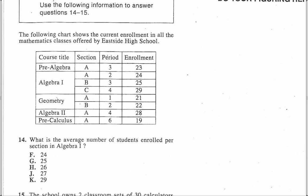This is a pretty standard English to algebra problem. They want the average, or the arithmetic mean, and they also want that for Algebra 1 specifically, per section. Since I have three sections of Algebra 1 students, I'm looking for the average of these three numbers.